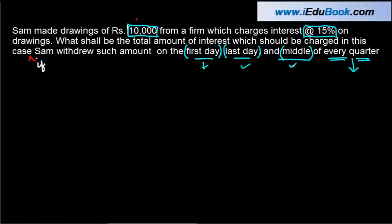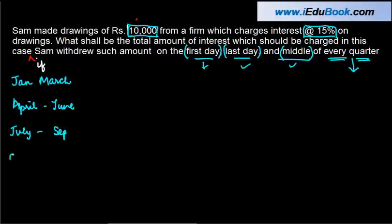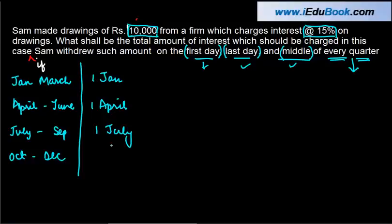The first quarter is January to March, second is April to June, third is July to September, and fourth is October to December. The drawings are made on first January, first April, first July, and first October. Now we need to compute the period for which the money is used.